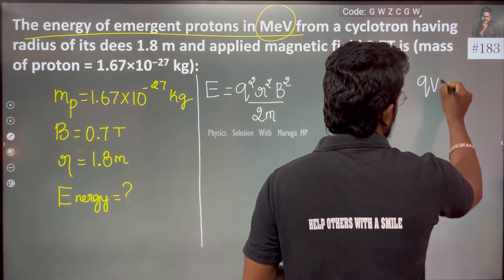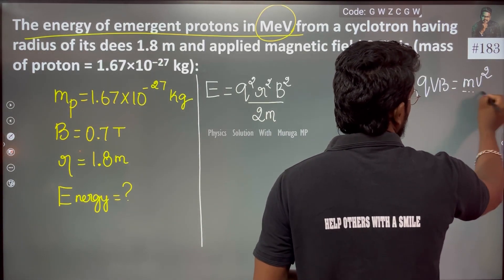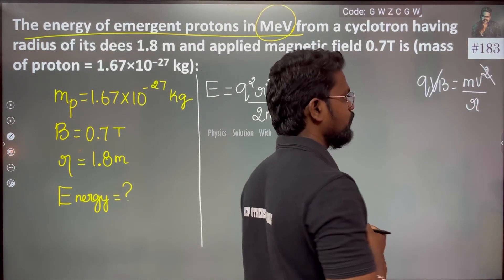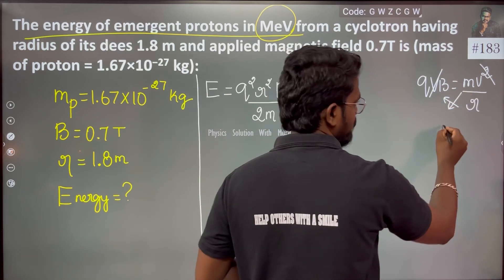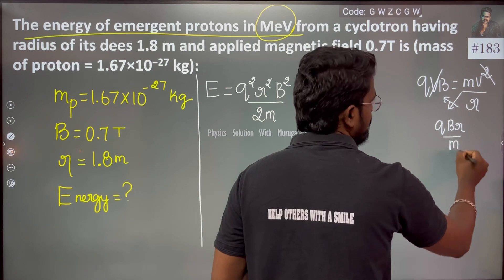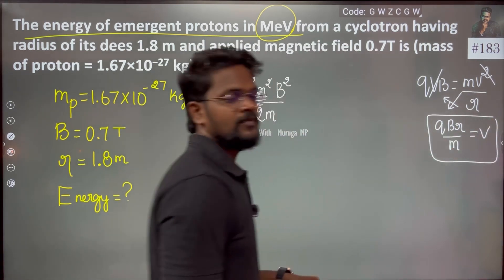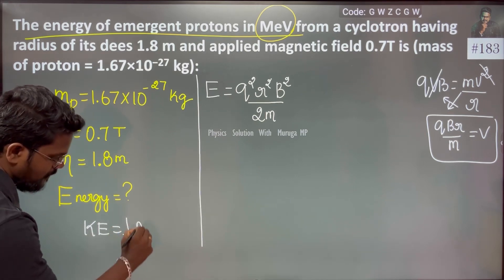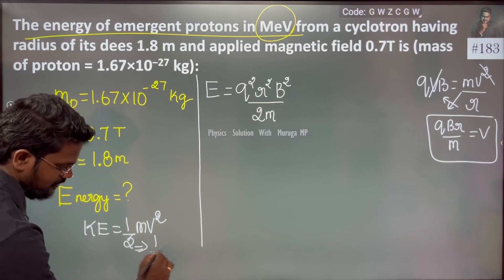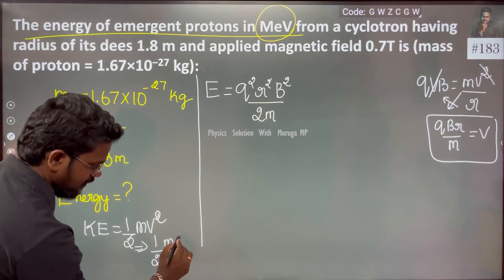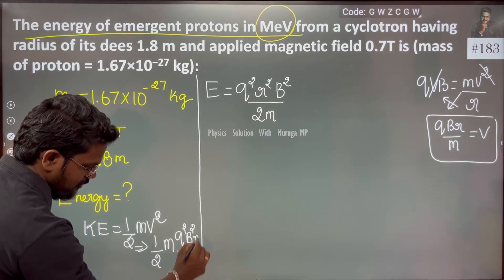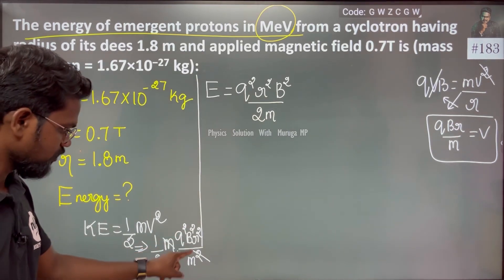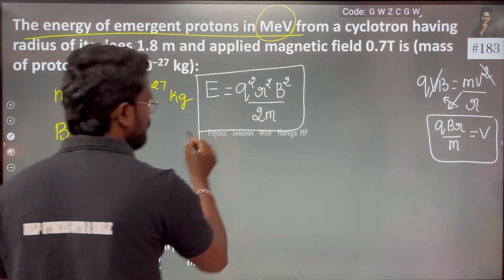In the cyclotron, the magnetic field produces the Lorentz force, which maintains the circular motion of the charged particle. From the force balance mv²/r, we get the velocity v = QRB/m. Therefore, kinetic energy E = ½mv² = Q²R²B² / 2m.